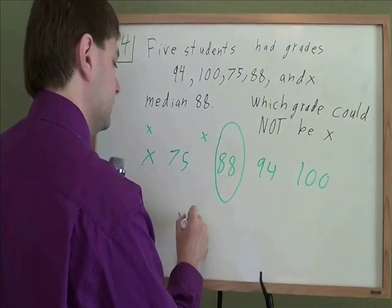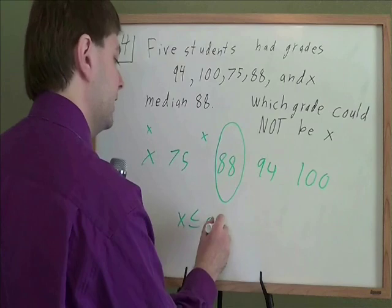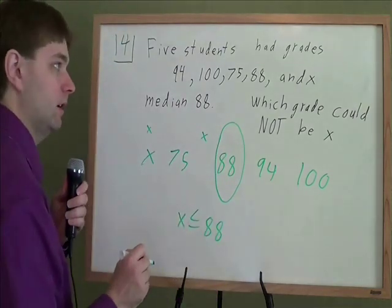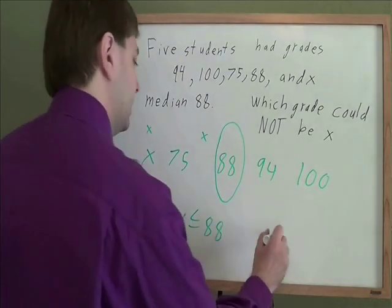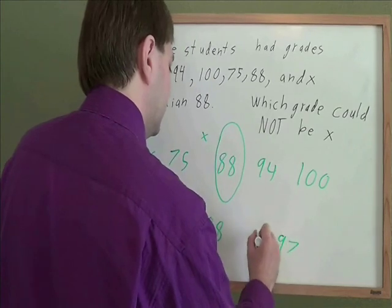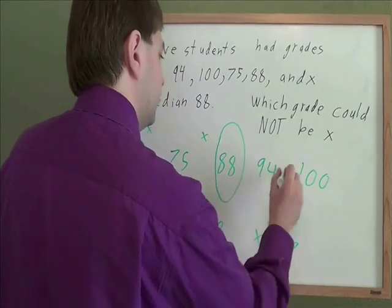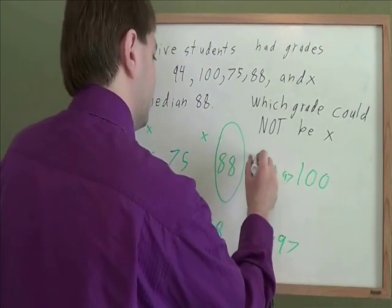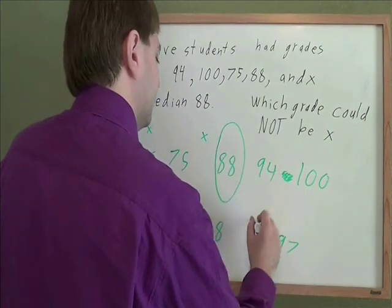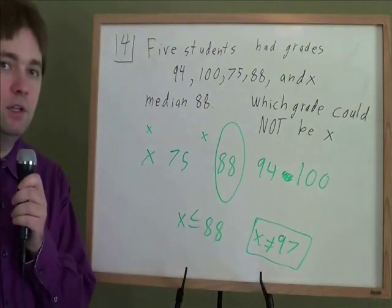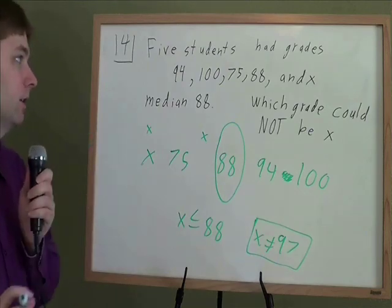So whatever X is, it can't be bigger than 88. It's got to be 88 or less, which means it is not allowed to be 97. That's too big. If 97 was your X, 94 would be the median then. So it can't be that. 97 is not a possible value here.